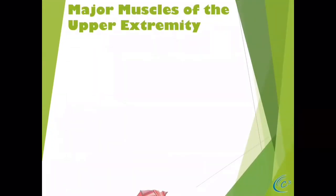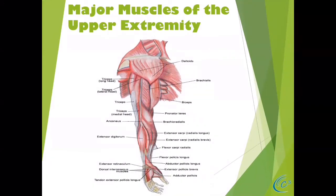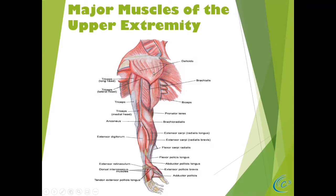Let's talk about the upper extremities of the upper arm. This is the right upper extremity with all the muscle — the skin is removed. Here are the muscles. Right here we have the deltoid, a big wide muscle, and it should be intact.